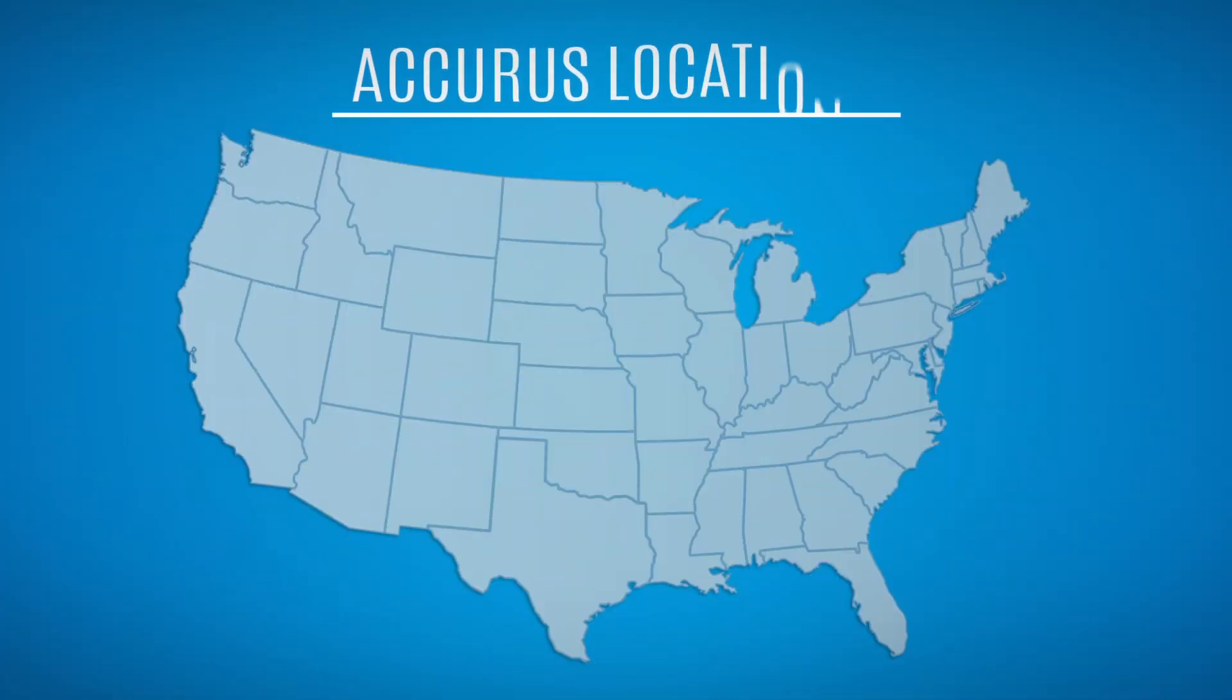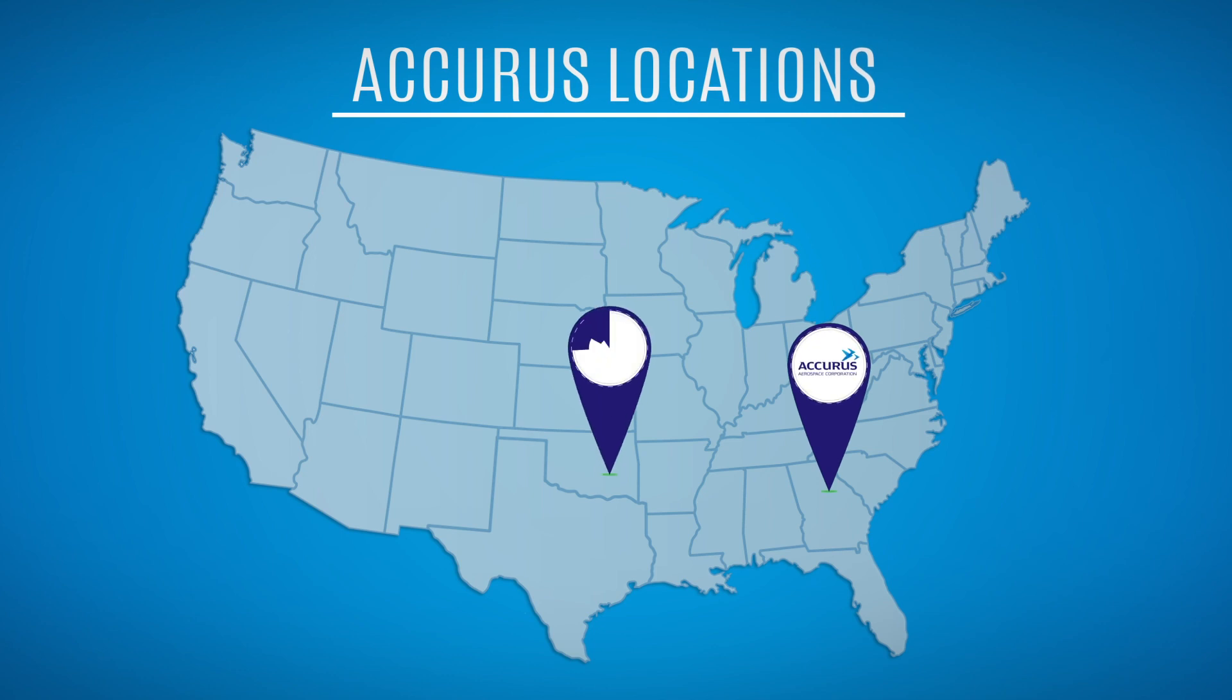This branch of AcuRus Aerospace is located in Athens, Georgia. There are also branches in Tulsa, Oklahoma, Kent, Washington, and Wichita, Kansas.